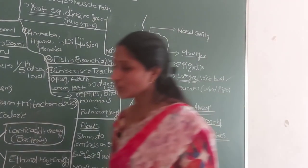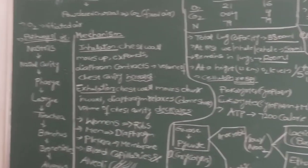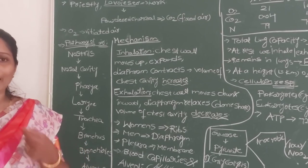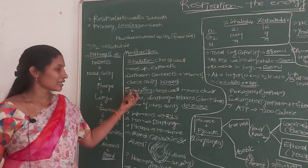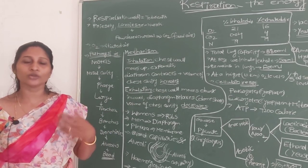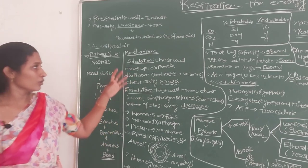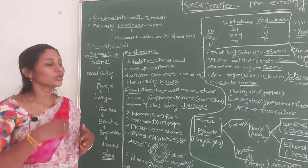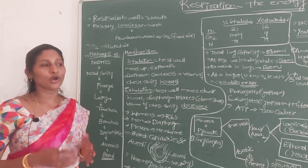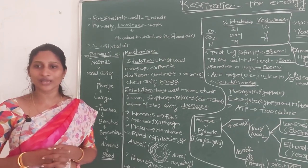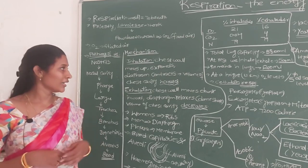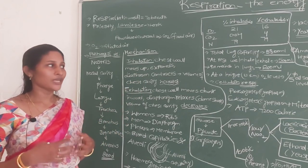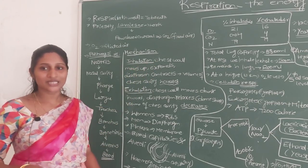Respiration mainly involves two processes: inhalation (or inspiration) — taking in air — and exhalation (or expiration) — expelling air. Before understanding these, we need to understand the chest cavity. The space below the neck and above the abdomen is called the chest cavity or thoracic cavity, where the lungs are located. The chest wall is made up of different muscles and bones called ribs.